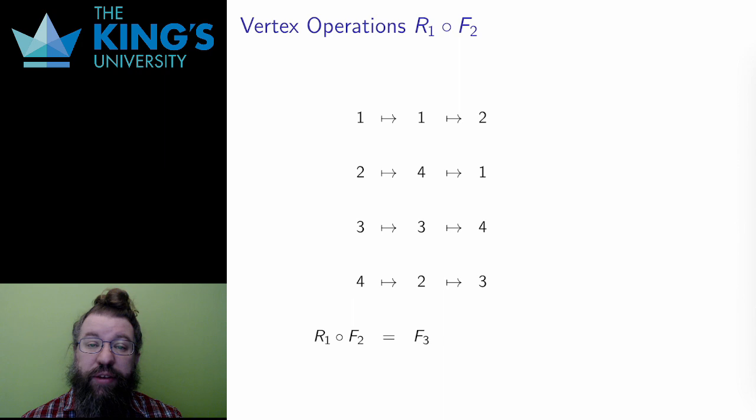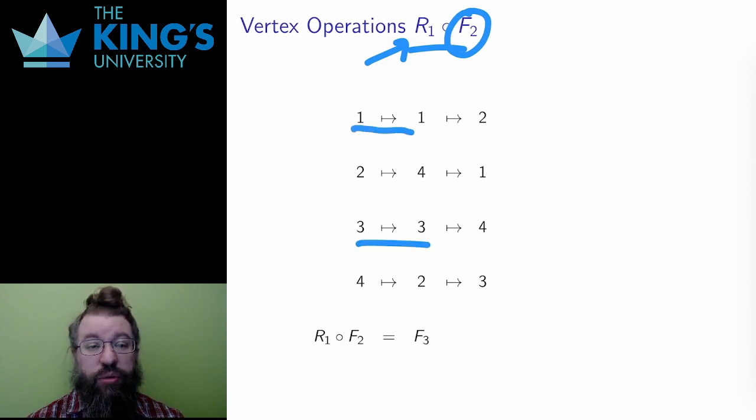The great advantage of this system is that I can use the vertex operations to understand composition. Let me take the two I've already described and compose them: R1 composed F2. With the composition order, this means I do F2 first, and then R1. Well, what did F2 do? It kept vertices 1 and 3 the same, and it switched 2 and 4. So I write down that transformation here.